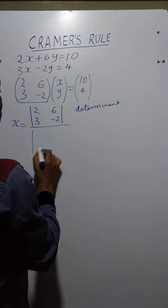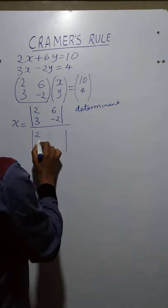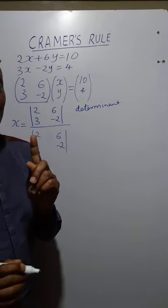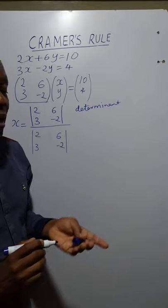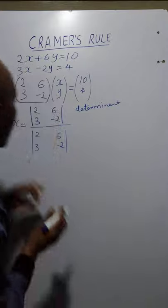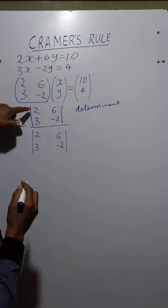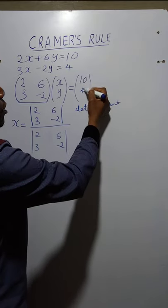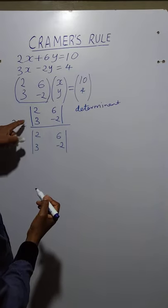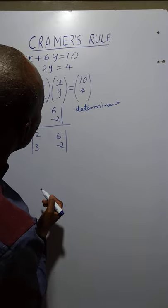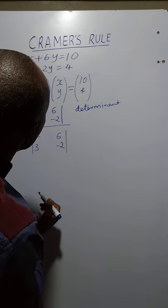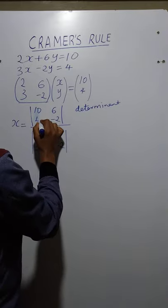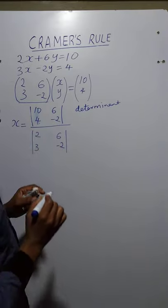And that's what we replicate on the denominator: 2, 3, 6, negative 2. But there will be an adjustment on the numerator side. Because we are looking for x, we shall replace the coefficients of x — which are 2 and 6 — with the constant values 10 and 4. We are only doing the replacement on the numerator side.